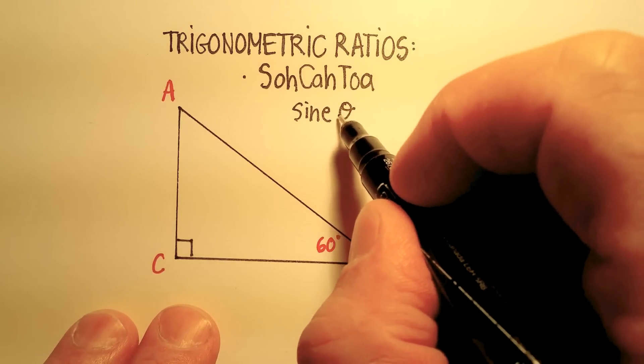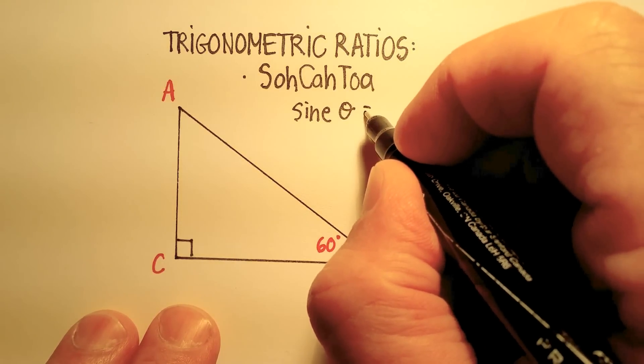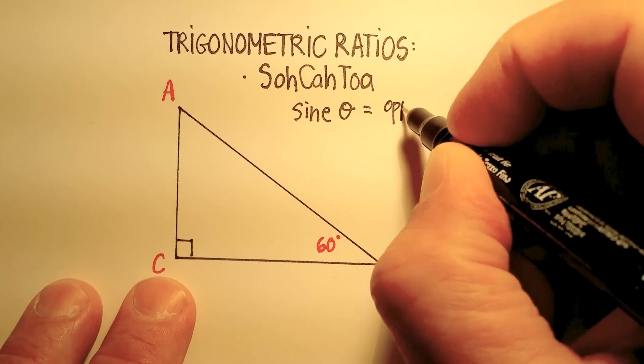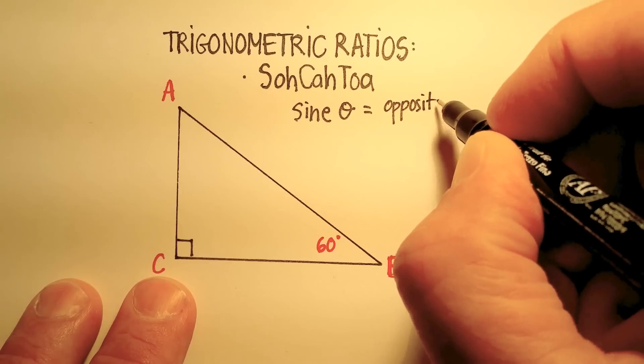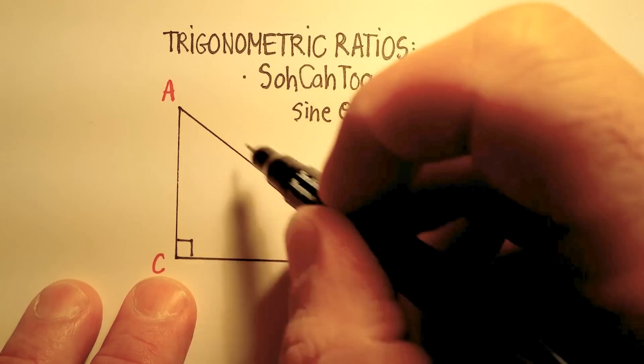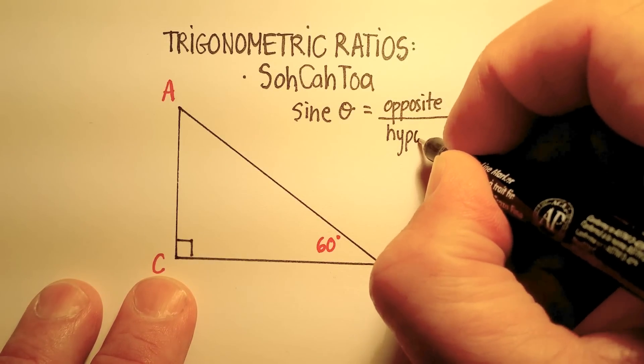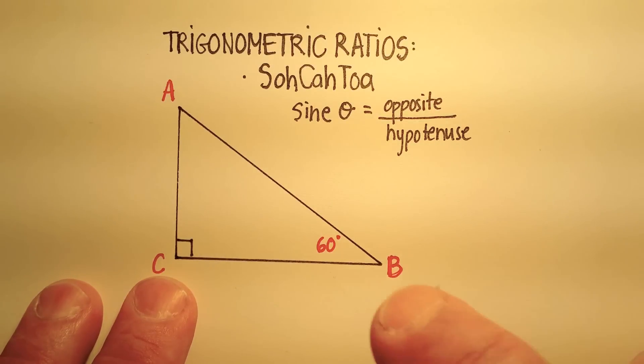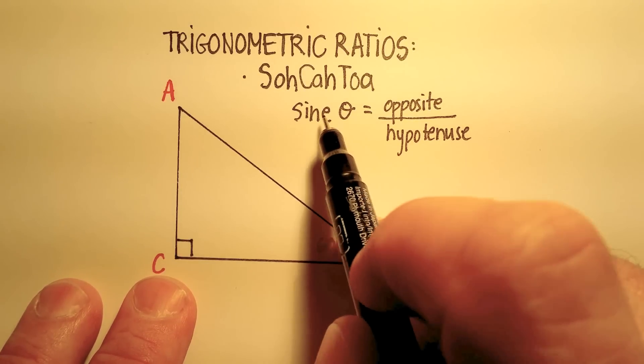So the sine of any angle would be equal to the opposite side of the triangle over the hypotenuse of the triangle. And it's called the sine.